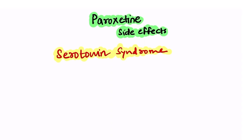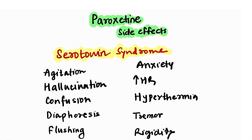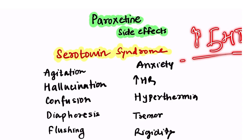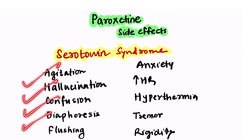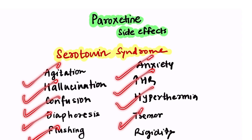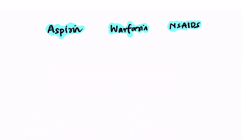One of the most important side effects of paroxetine is serotonin syndrome. Serotonin syndrome is due to increased levels of serotonin in the body and leads to features like agitation, hallucination, confusion, diaphoresis, flushing, anxiety, tachycardia, hyperthermia, tremors, and rigidity.